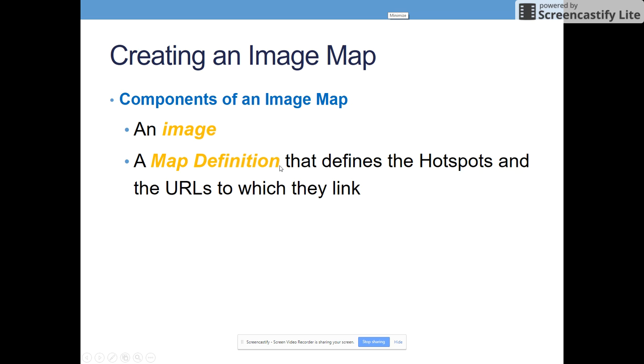So you'll have to have an image on your image map as well as what's called a map definition. And that's actually where we write the code for that image. So it defines all of the hotspots and the URLs to where they will link. So you'll have your image map, the image part, and then you'll have a map definition that really identifies those hotspots, their locations, where they are at, and then the URLs where they will link to when they are actually clicked.